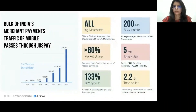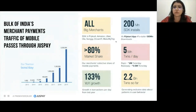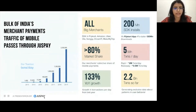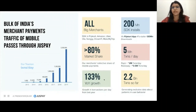Let's go to the numbers. We have different merchants like Flipkart, Amazon, Uber, Ola, Swiggy, Dream11 — these are very commonly used apps. If you are using UPI payments on Amazon or Swiggy, all payments are going through JustPay. The bulk of India's merchants' mobile payment traffic passes through JustPay. We started from 2012 and have continuously been growing — 2.2 billion transactions so far, and 5 million transactions per day.